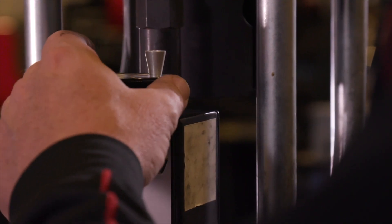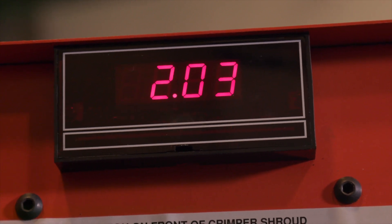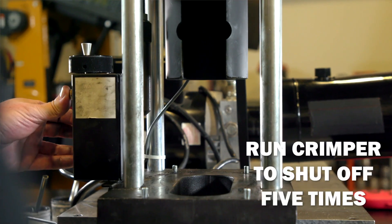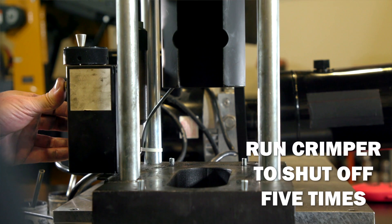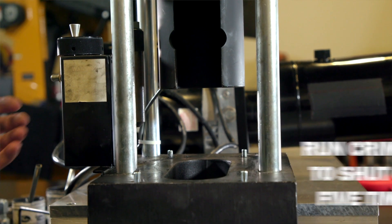To properly cycle a newly installed crimper, dial in a setting of 2.00 and run the crimper down to shut off with no die set loaded five times.